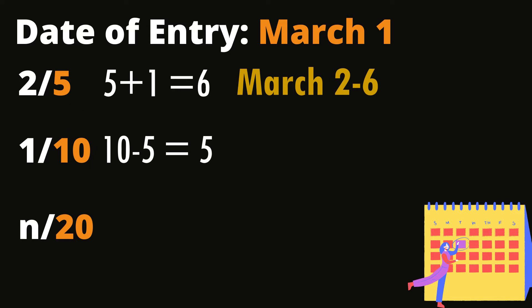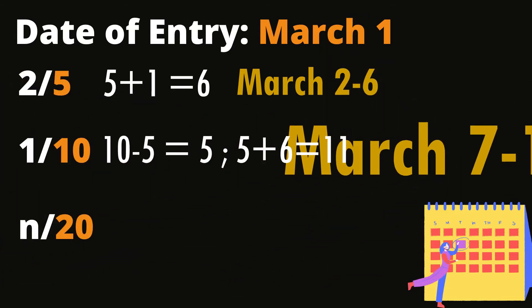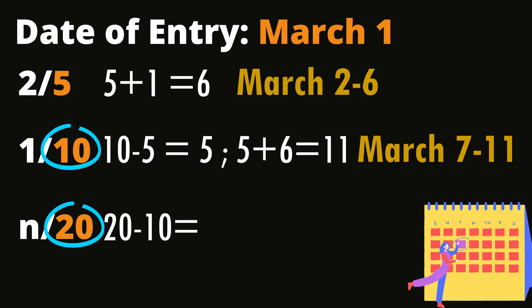Therefore 5 plus 6 equals 11. The second credit term's discount period is from March 7 to March 11. For the last and third credit term, basically 20 minus 10 equals 10.